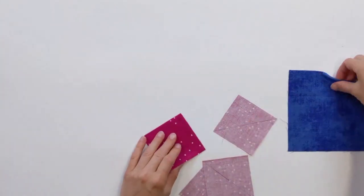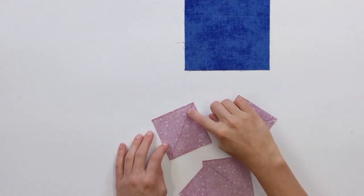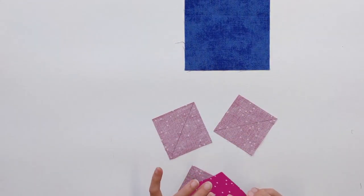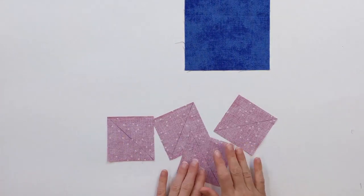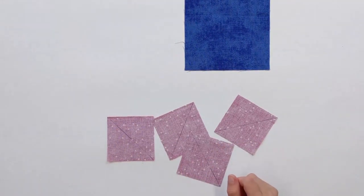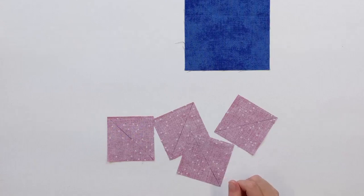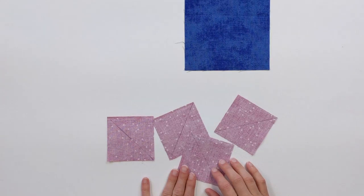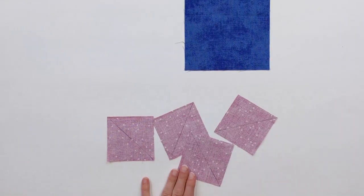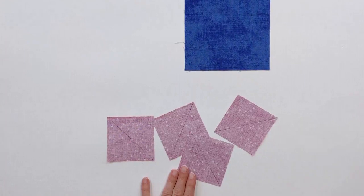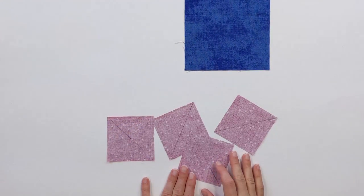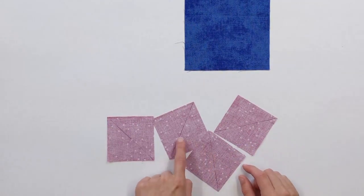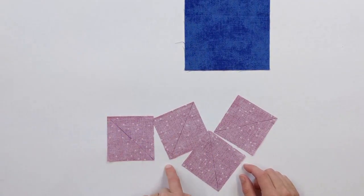On the back side of all your small squares, you're going to mark a line diagonally through all of them. Again, I have used a pen. I don't necessarily recommend a pen. I would recommend a Hera marker, a water-soluble marker, a chalk pencil, or even a mechanical pencil. But something that isn't going to potentially bleed or ruin your fabrics when you're cutting and using steam and washing it down the road when your quilt is all done. That would be really sad. So I have used pen just to show you, but I don't recommend pen.